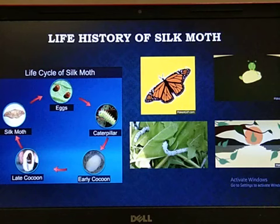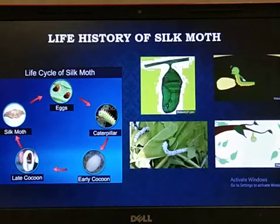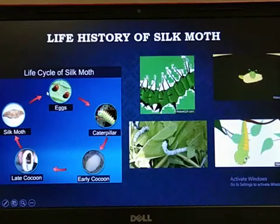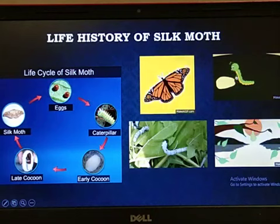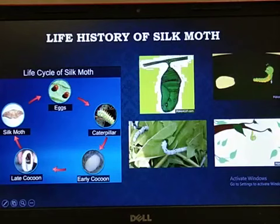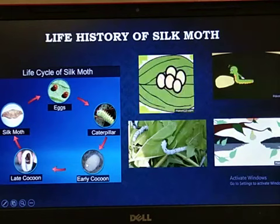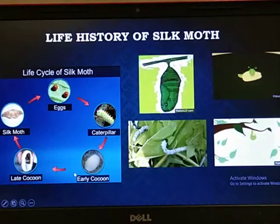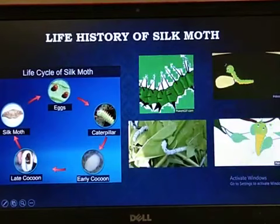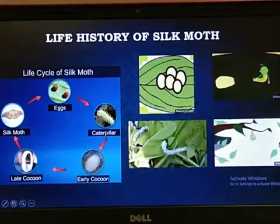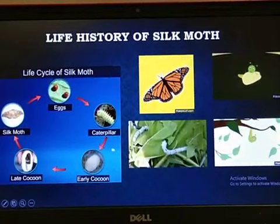The life history of the silk moth begins with eggs. The female silk moth lays eggs, from which larvae called caterpillars or silkworms hatch. The caterpillars grow in size. When the caterpillar is ready to enter the next stage — the pupa stage — it first weaves a net to hold itself, then swings its head from side to side in the figure of eight to form an early cocoon.